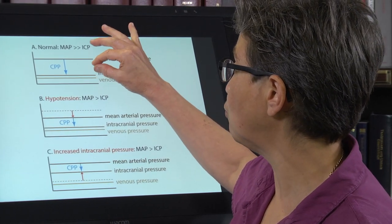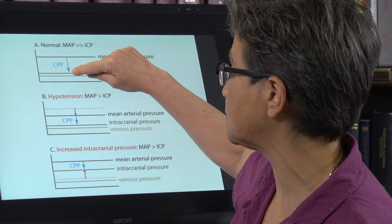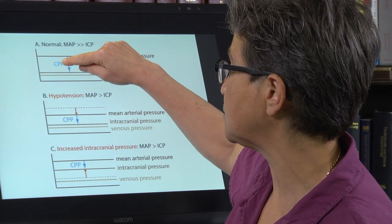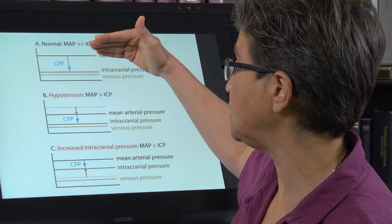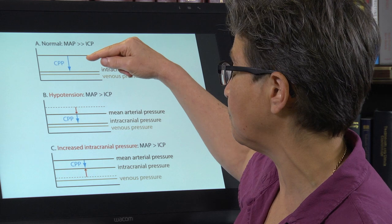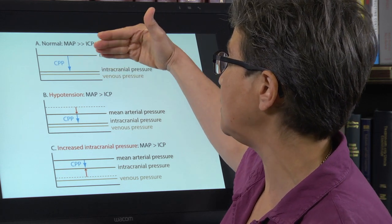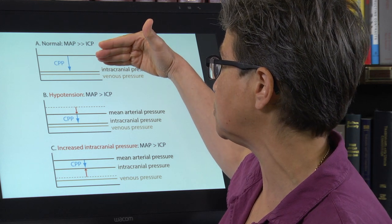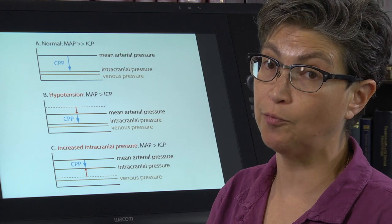Two things can go wrong to decrease the value of this difference. The value of this difference is the cerebral perfusion pressure. The cerebral perfusion pressure can be decreased below the necessary value by either a drop in mean arterial pressure, hypotension, or an increase in intracranial pressure.